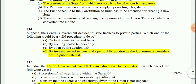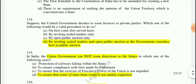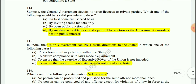Question 114: Suppose the central government decides to issue a license to private parties — which would be the valid procedure? The answer is: invite sealed tenders and open public auction, whichever the government considers best in public interest.